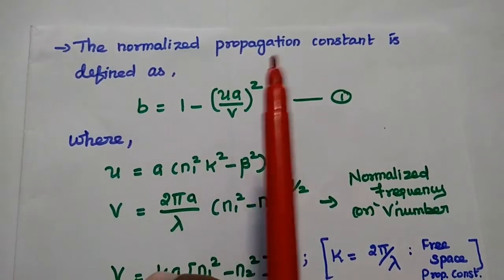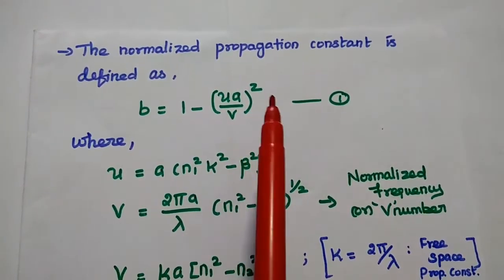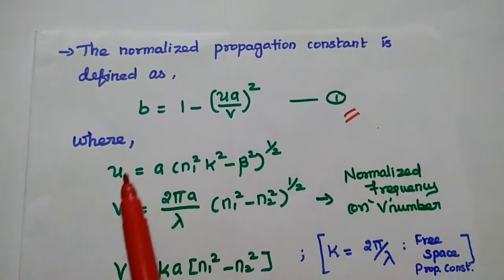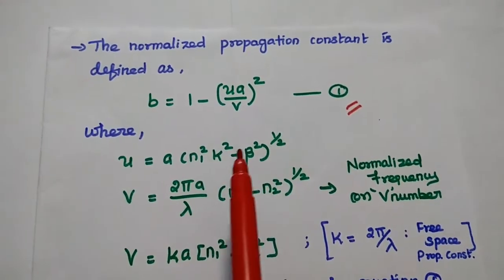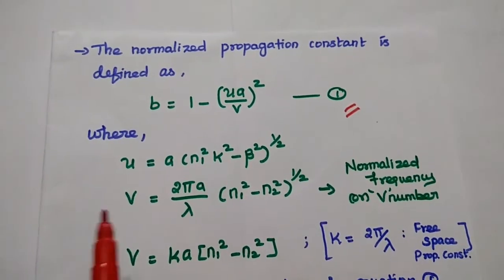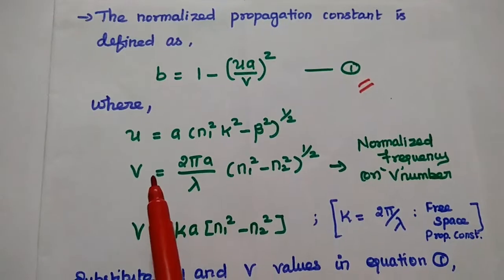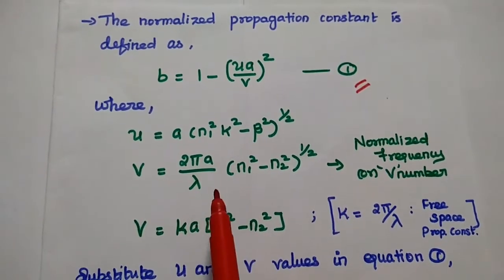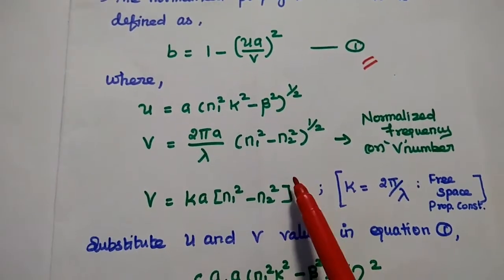We consider the normalized propagation constant b = 1 − (ua/v)², which is the first equation. Here u is the normalized value: a·(n1²k² − β²)^(1/2). Here k is the free space propagation constant, with value 2π/λ. The normalized frequency v (also called the v number) is equal to (2πa/λ)·(n1² − n2²)^(1/2). Since 2π/λ = k, we can write v = k·a·(n1² − n2²)^(1/2).